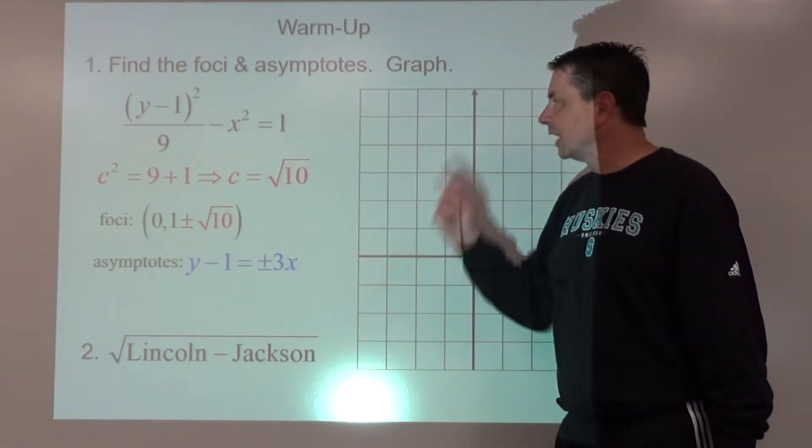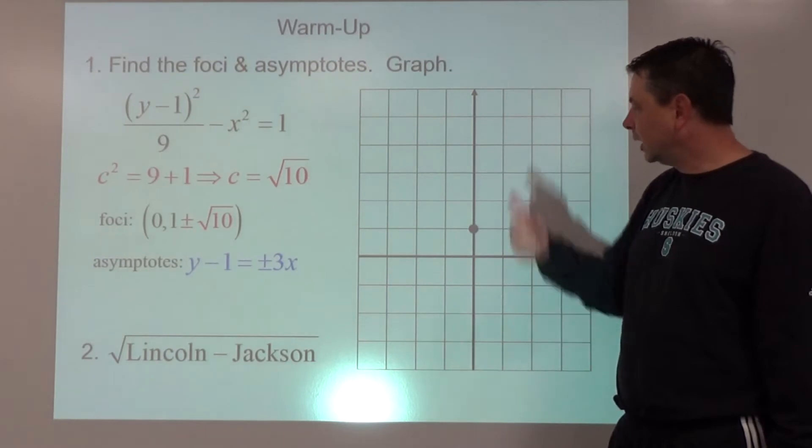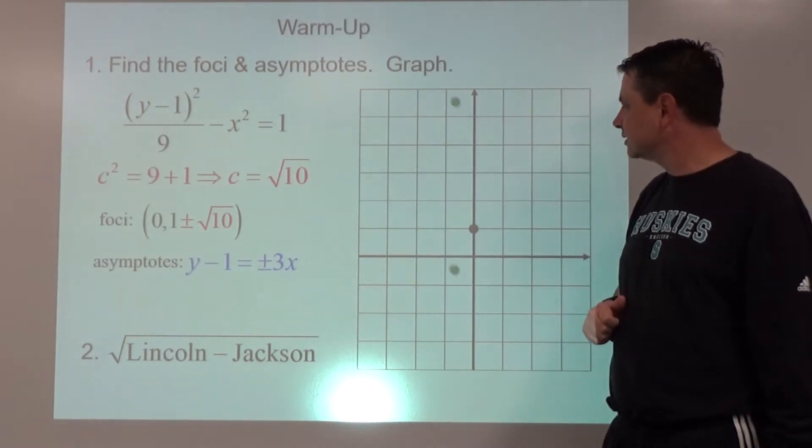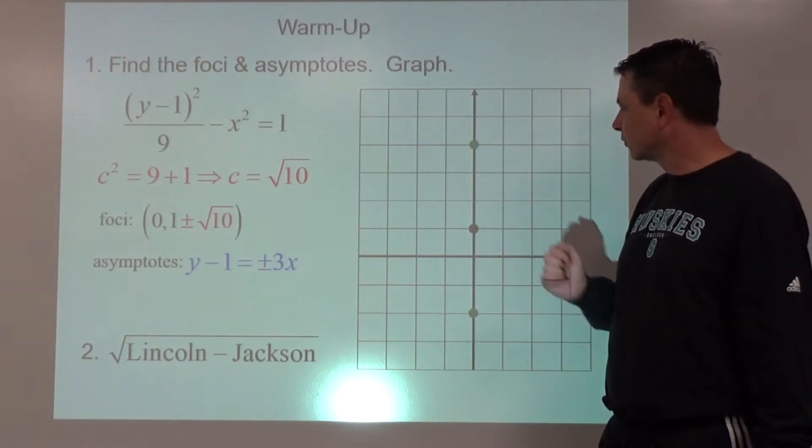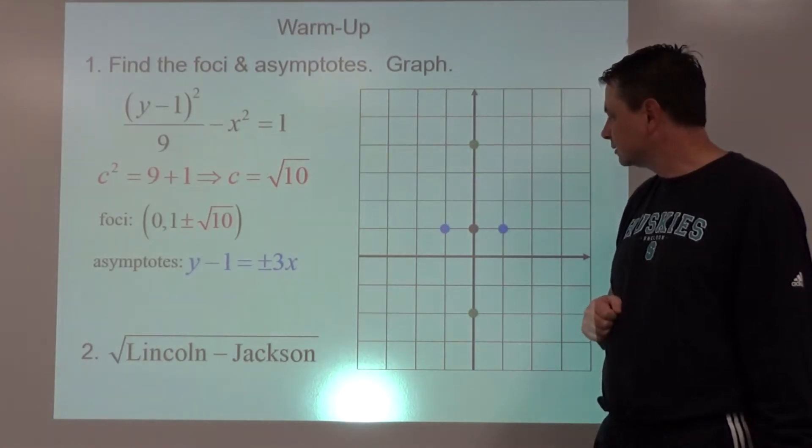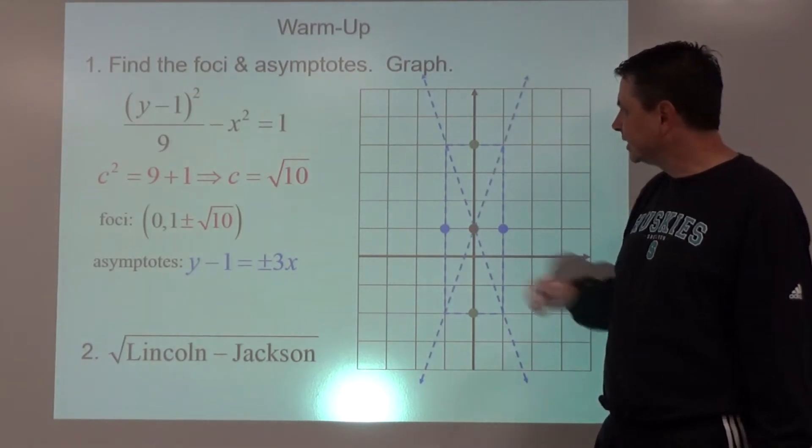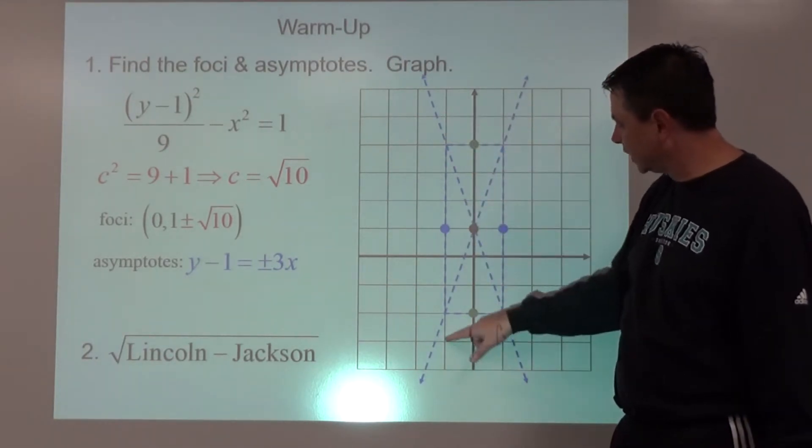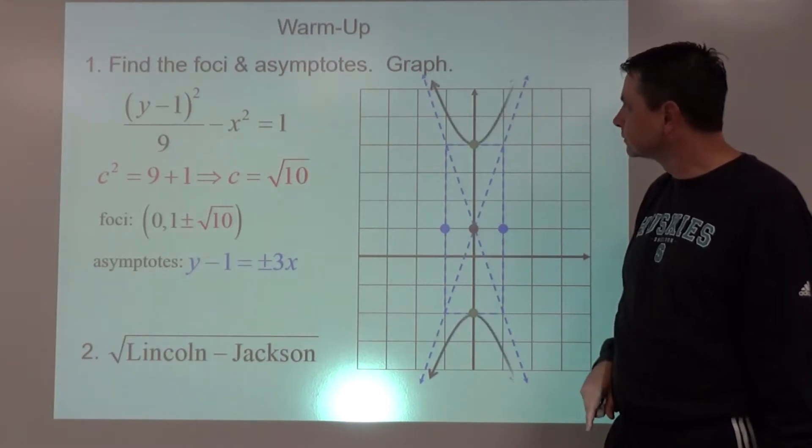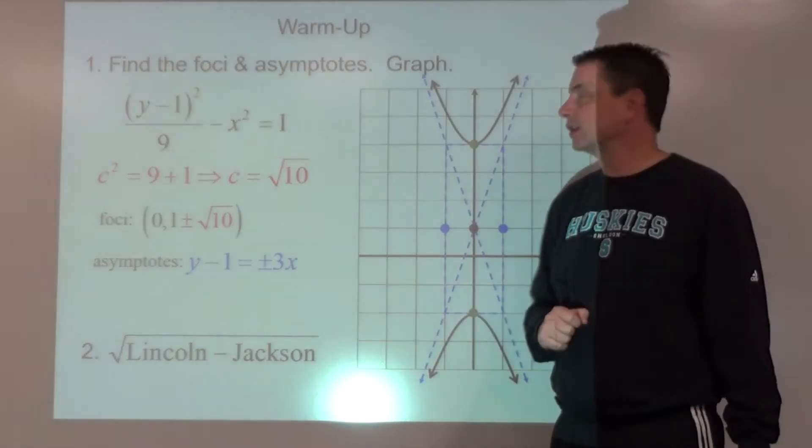As far as graphing, we know the center is (0,1). We're going to go up 3 and down 3 for vertices, left 1, right 1 for box points. Draw the box, draw the X. Since the vertices are here and here, that's where the branches are going to go. We are not required to plot the foci.